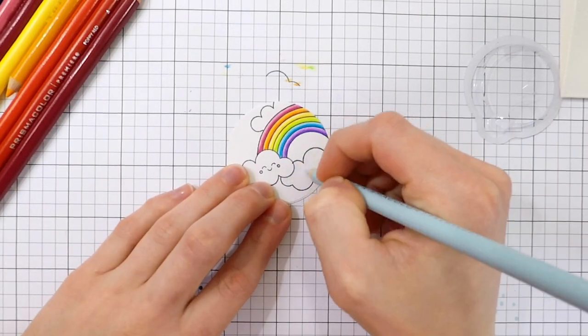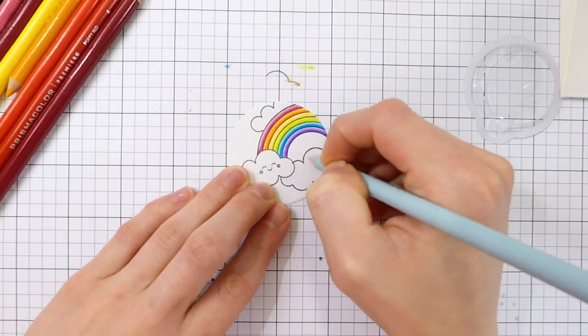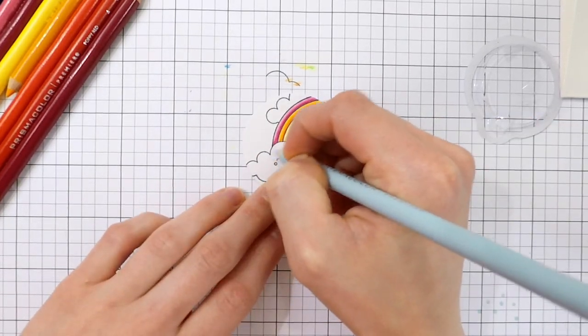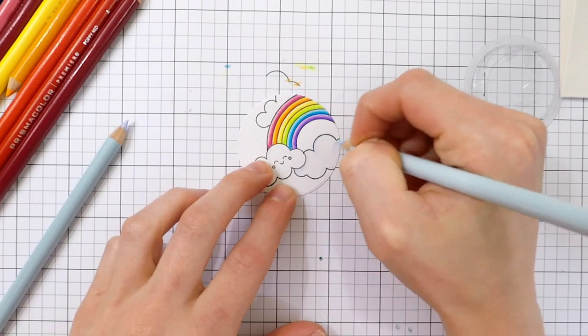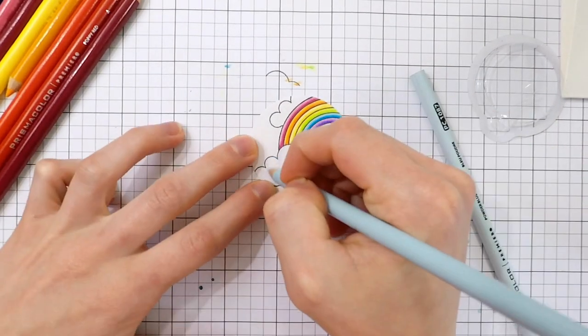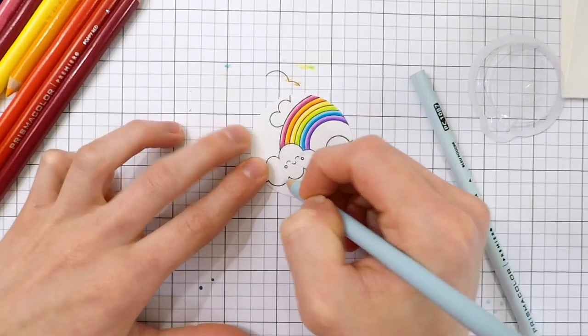For the clouds, because they're white, of course, I want them to be a very light color. So I'm using two very light blue colors and just adding very small areas of shading along the very edges, just to give them a little bit of texture and dimension, but nothing too crazy.